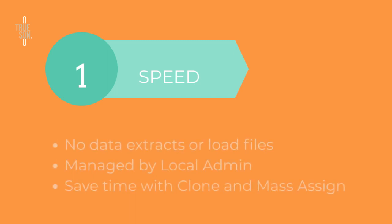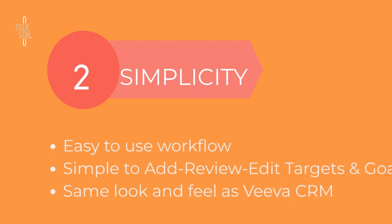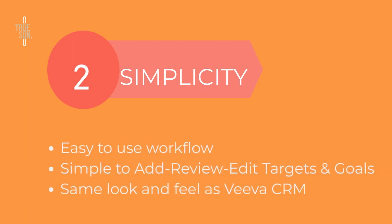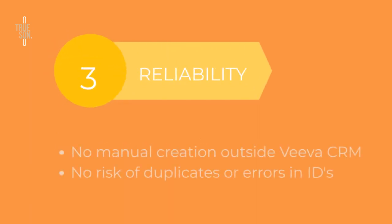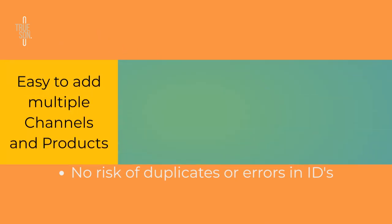Set up multi-channel cycle plans in hours instead of days or weeks. It makes it simple to add, review and edit targets and goals. The app uses your account and segmentation data in Viva, avoiding risk of errors when preparing load files.